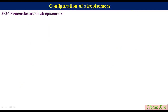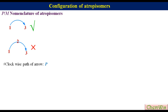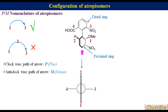PM nomenclature is another way of assigning configuration of atropisomers. All the steps for determination of P and M configuration are the same as for RS configuration except the last step. In this case, an arrow is drawn from 1 to 3 — not 1 to 2 to 3. A clockwise path of the arrow represents P (meaning plus), while an anticlockwise path represents M (meaning minus). Taking the previously discussed example with its Newman projection and drawing an arrow from 1 to 3 — since the direction of the arrow is anticlockwise, the configuration will be M.